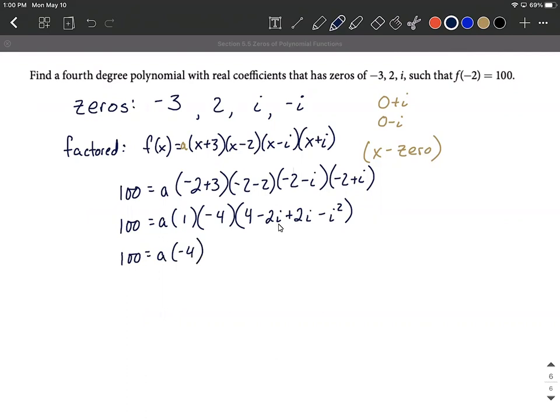Simplifying this down we can cancel out negative two i plus two i. Bring that four along. Now be careful - whenever you see i squared recall that i squared is always equal to negative one. So we can replace this i squared with negative one. This gives us 100 equals a times negative four times - the double negative makes an addition - so five.